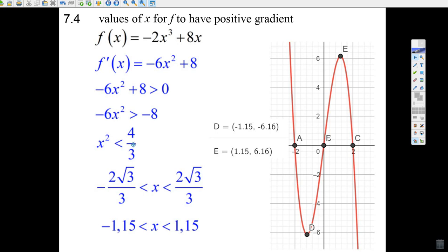If we take the square root, we're going to get the answer. The square root of 4 thirds is about 1.15. And as long as x is less than 1.15 or greater than negative 1.15, it'll have a positive gradient.